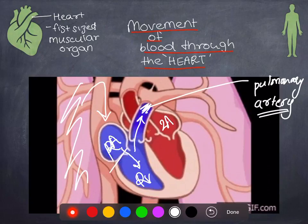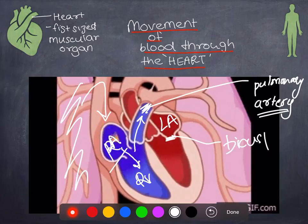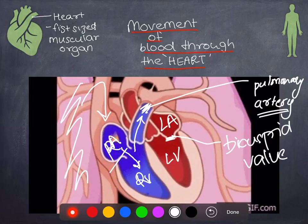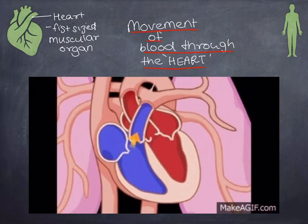The next part of the animation shows oxygenated blood — the red color — coming to the left atrium. This valve opens, and this is the bicuspid valve. So remember: between the left atrium and left ventricle there is a bicuspid valve; between the right atrium and right ventricle there is a tricuspid valve. Blood then moves into the left ventricle and from there into this blood vessel, which is the aorta — the largest artery.